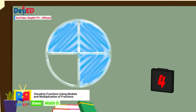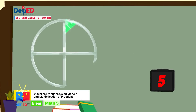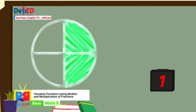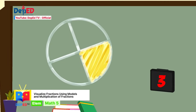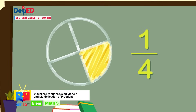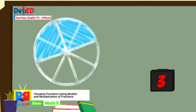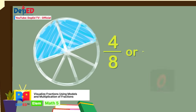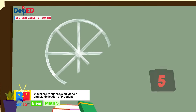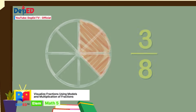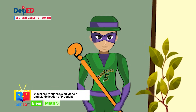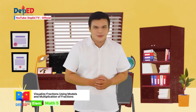Number one — the answer is three-fourths. Number two — the answer is two-fourths or one-half. Number three — the answer is four-eighths or one-half. Number five — the answer is three-eighths. Did you get all the right answers? Great, see you on your next quest, math heroes! You always impress Super Driller with your superpower in answering all his drills.